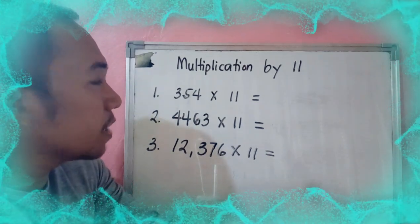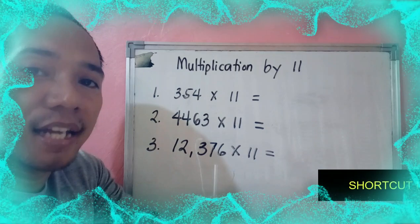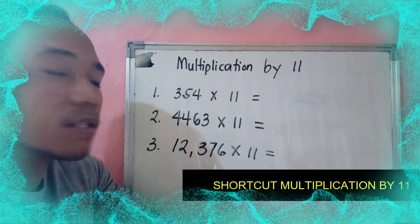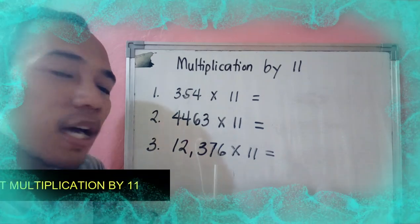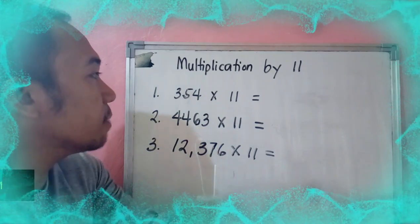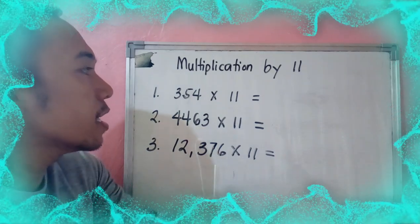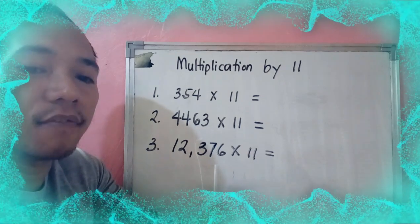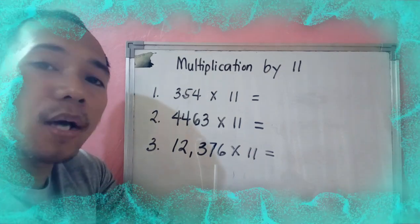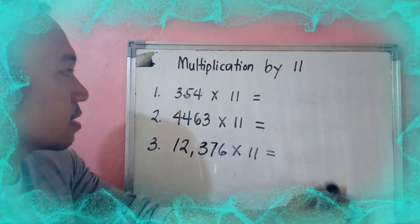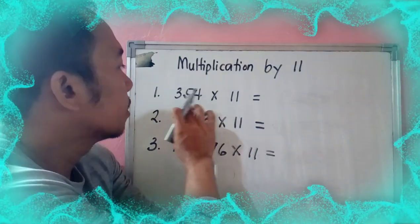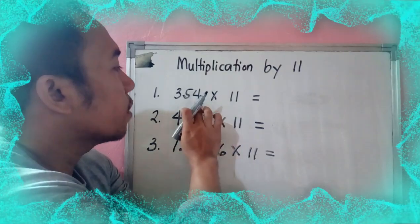Let's start with the basic one. We have 354 times 11. So what is the product for this? First,